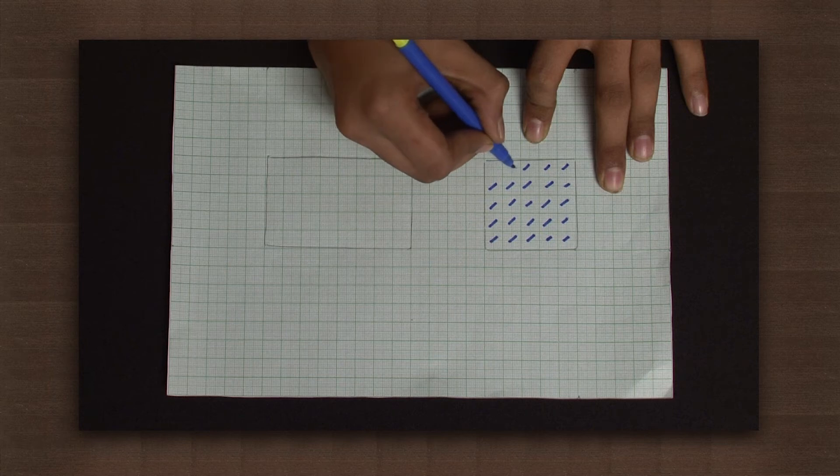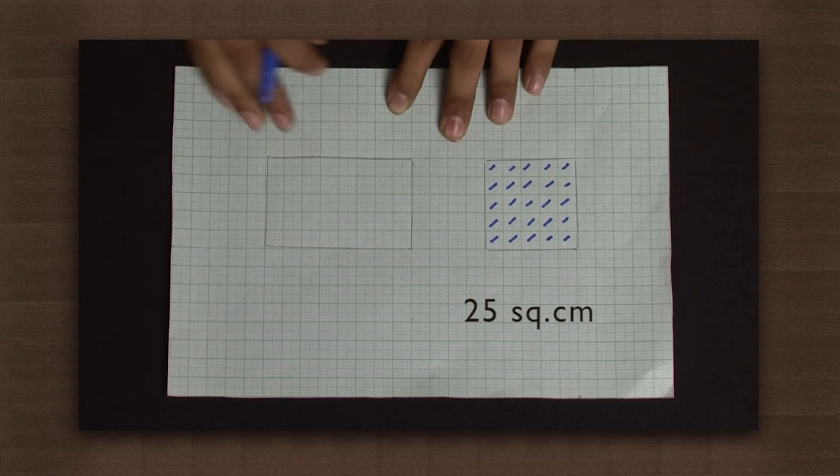The square occupies 25 blocks, hence the area is 25 square centimeters.